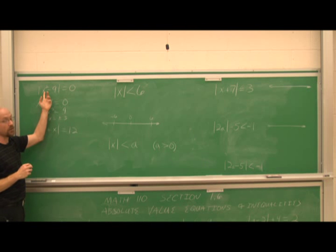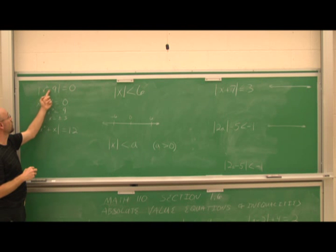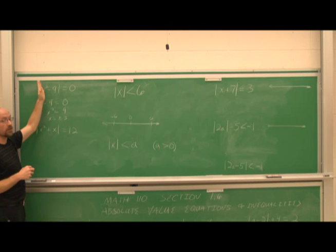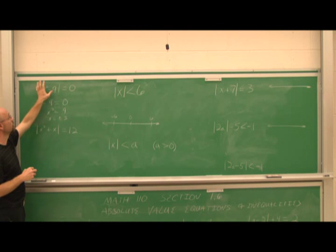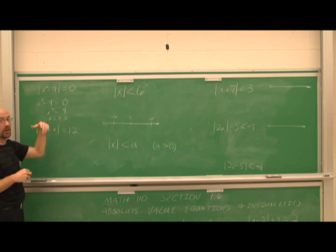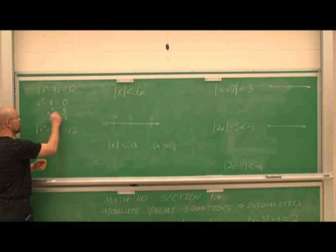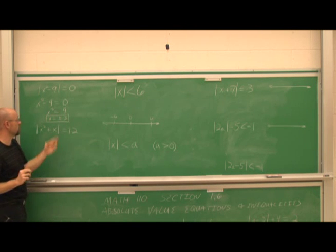Let's plug those values in to check. 3 squared minus 9 is 0 — that's 9 minus 9. Negative 3 squared is positive 9; 9 minus 9 is 0. The absolute value of 0 is 0. So both of these work, and my solutions are plus or minus 3.